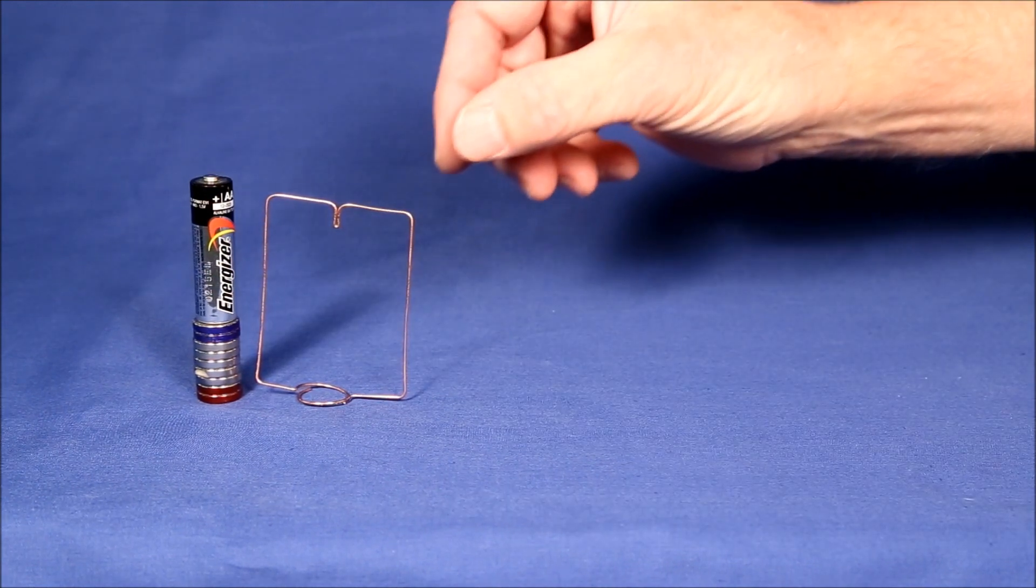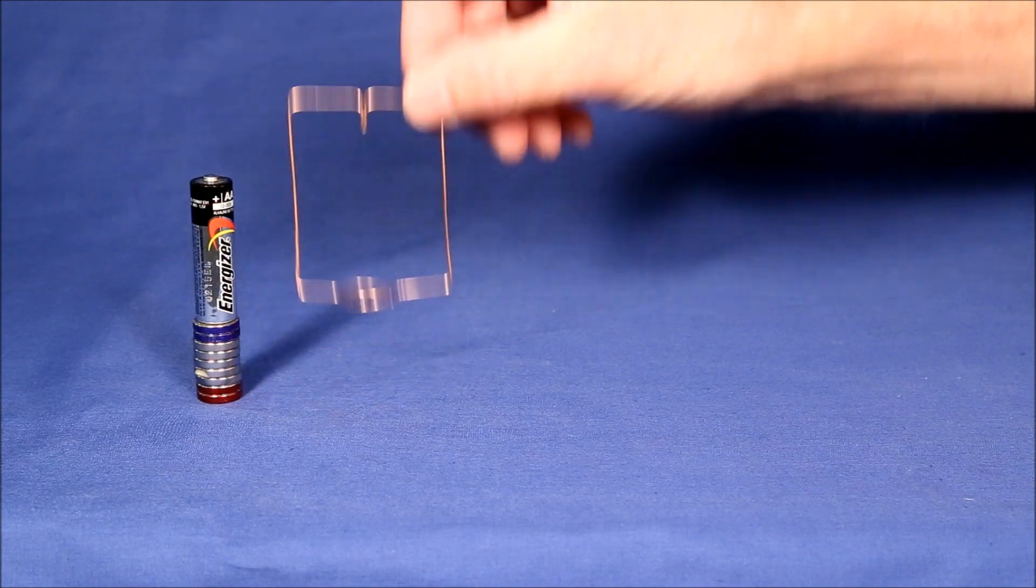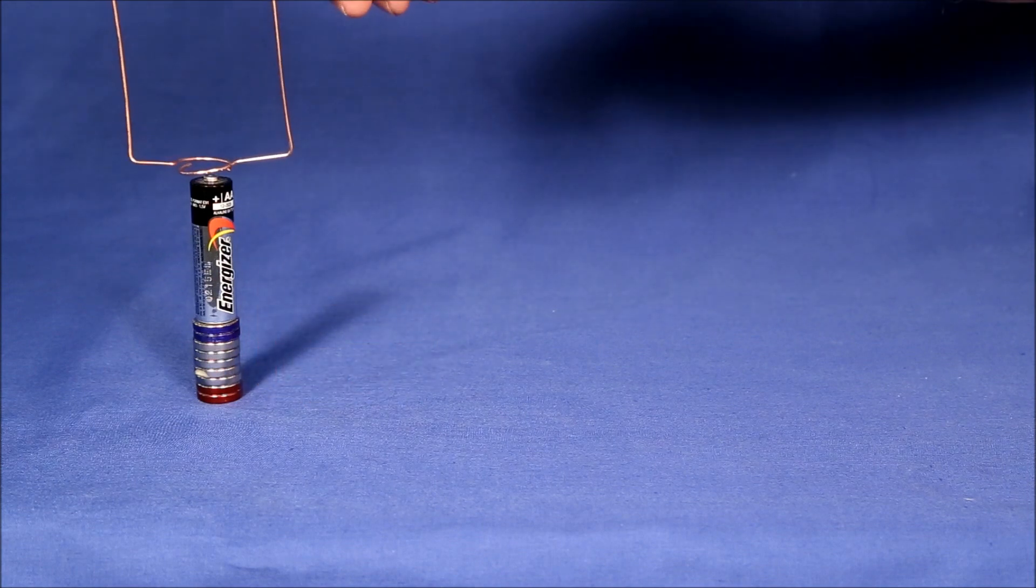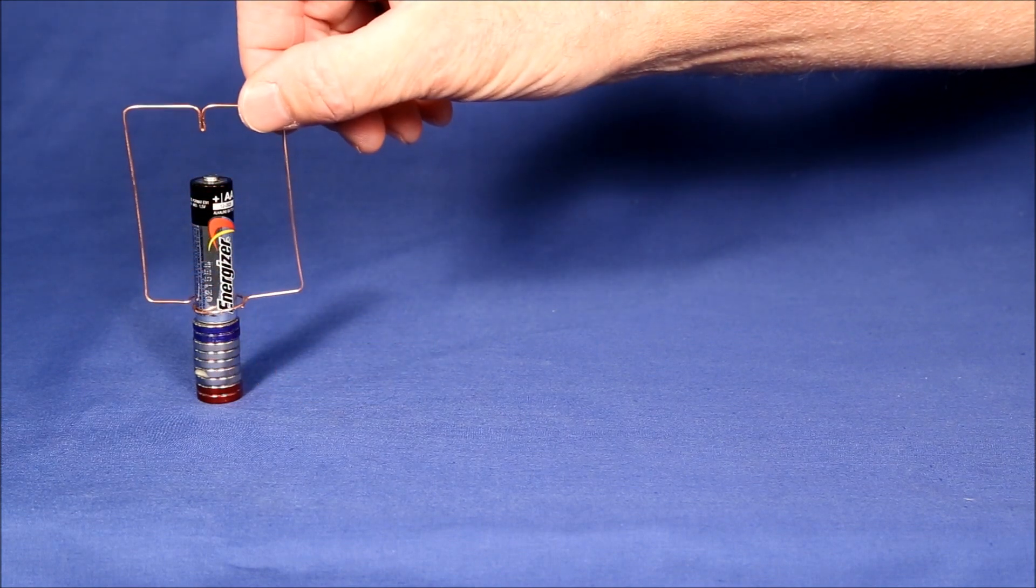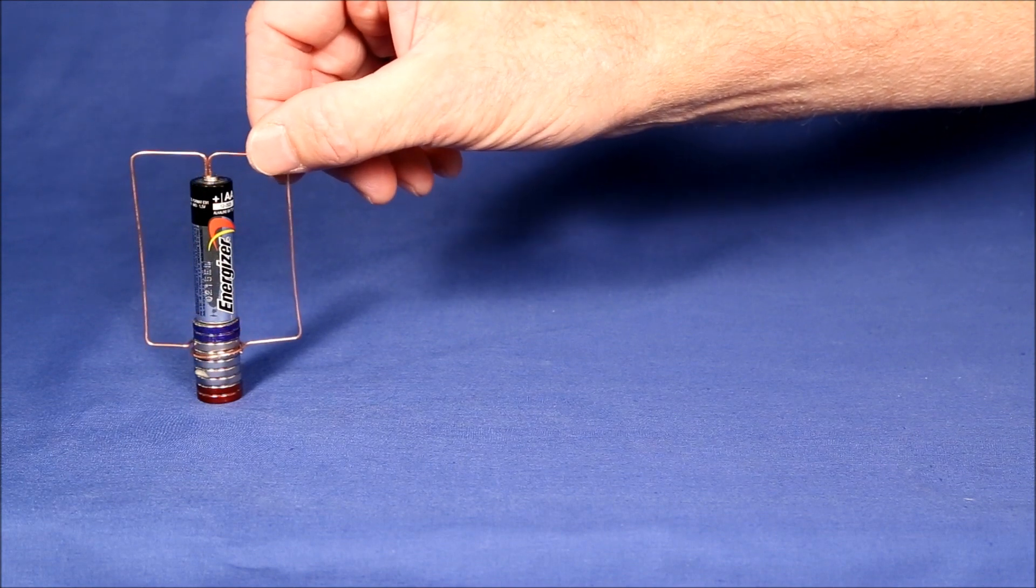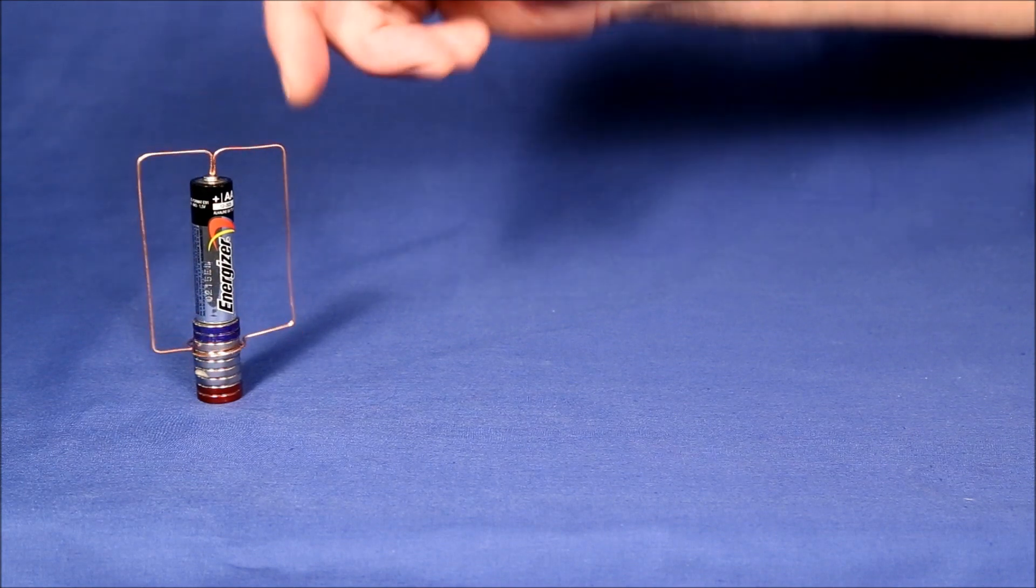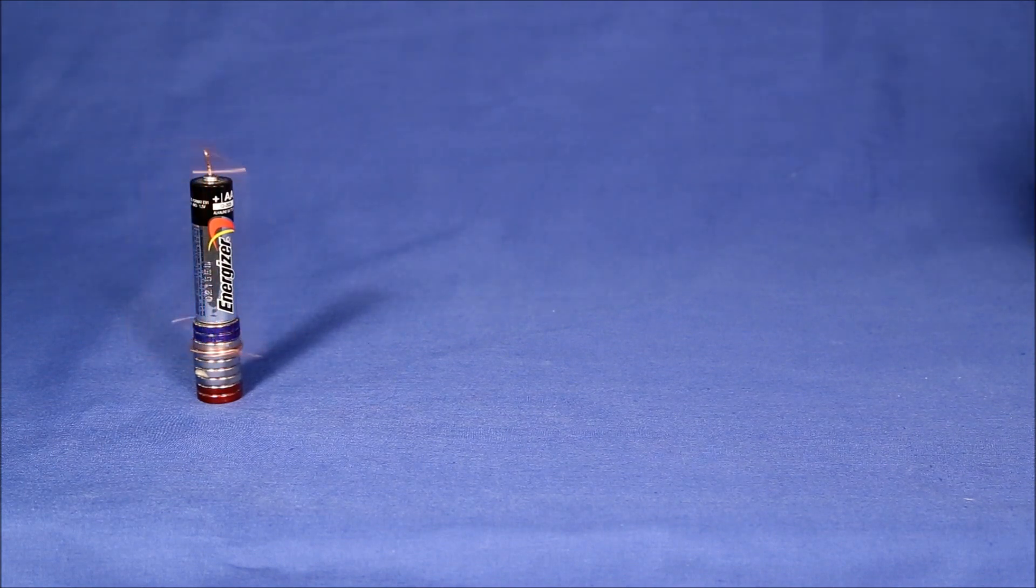So, if the theory is correct, then when I place the armature on the battery magnet set, it should rotate this way. And it does.